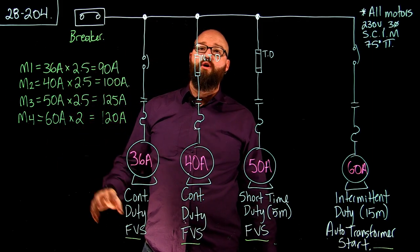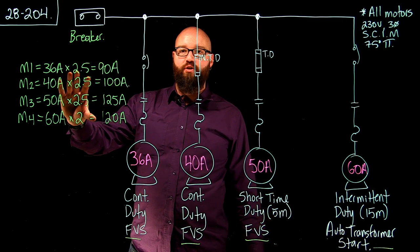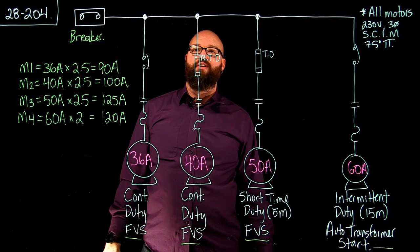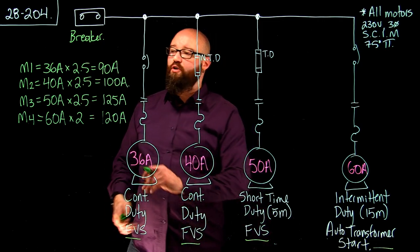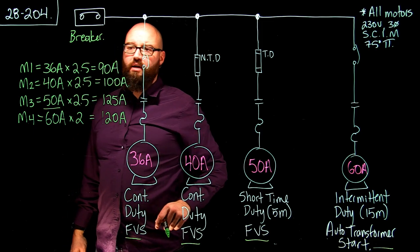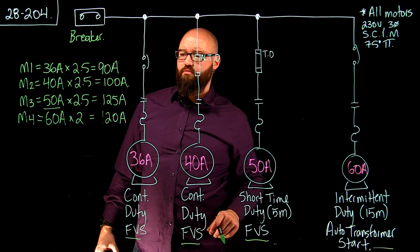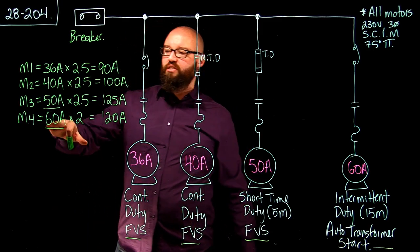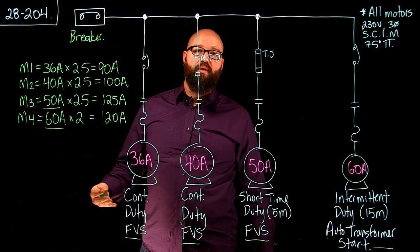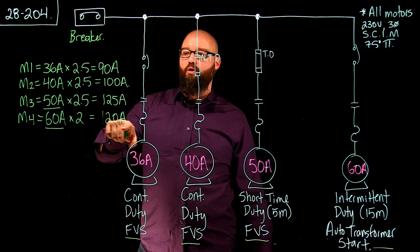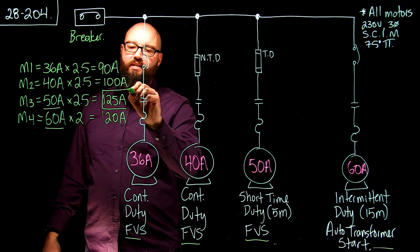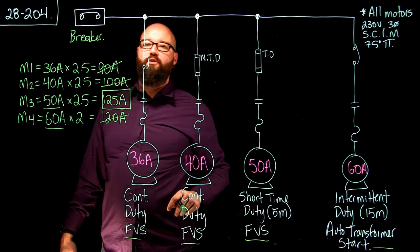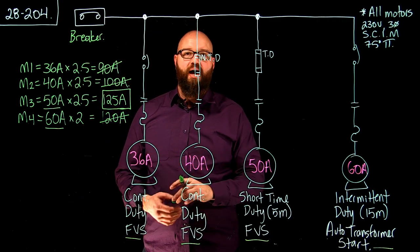The whole point of this is to determine which of these motors will have the highest calculated value, using the main overcurrent device as the determining factor for the multiplying factor. Even though we have a 50-amp FLA and a 60-amp FLA, you would think the 60-amp FLA would win. But because the multiplying factor for the auto-transformer start gives a smaller calculated value, the number that actually wins is 125 amps. At this point, we discard all other calculated values — we only used them to determine which one was highest.